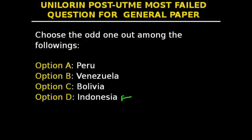Hello guys, this is question 35 in our series. Choose the odd one out among the following: option A, Peru; option B, Venezuela; option C, Bolivia; and option D, Indonesia. Peru, Venezuela, and Bolivia are all countries in South America, except for Indonesia, which is a country in Asia. So the answer to this question is option D, which is Indonesia.